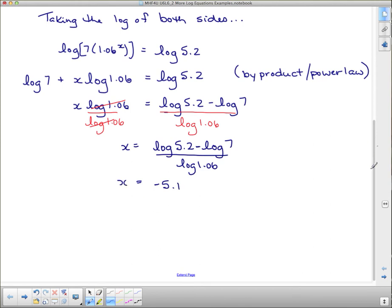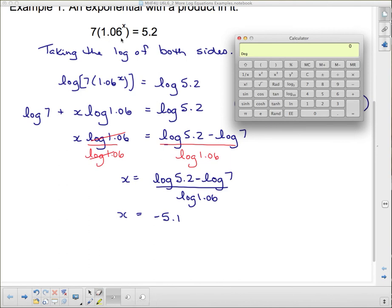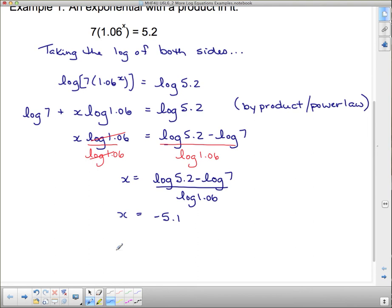Now we should have a look at restrictions on the variable and see if that negative 5.1 makes sense in the context of the question. x was the exponent in the first place, so there's no restrictions on an exponent. So that negative 5.1 is fine. You can even plug it into your calculator. I need to put 1.06 to the negative 5.1, and I'm going to multiply that by 7 and hopefully I get somewhere close to 5.2. Times 7 equals 5.2004. So that is very close to 5.2, that looks like a good answer. But it's still just an approximate answer, so I'm going to put a dot on it.